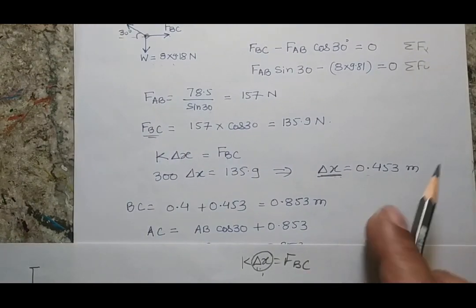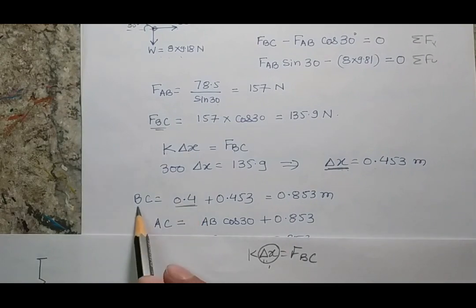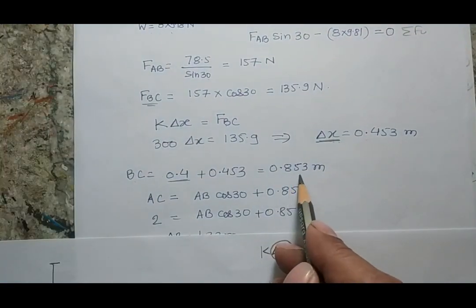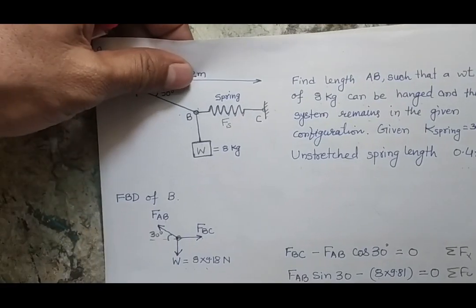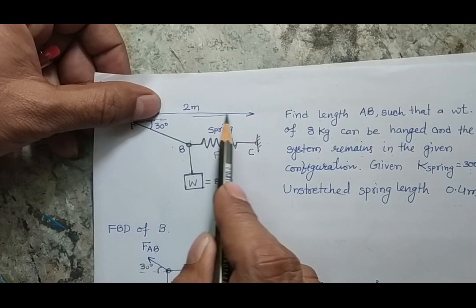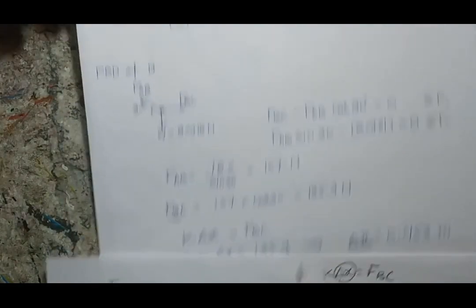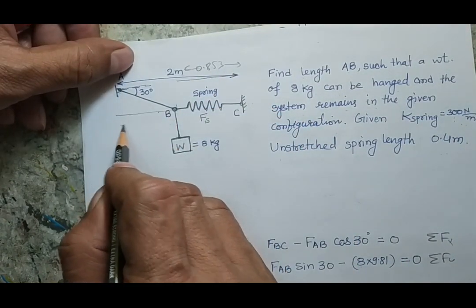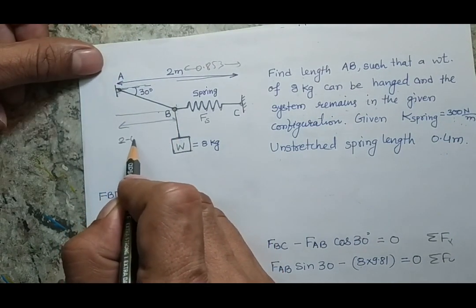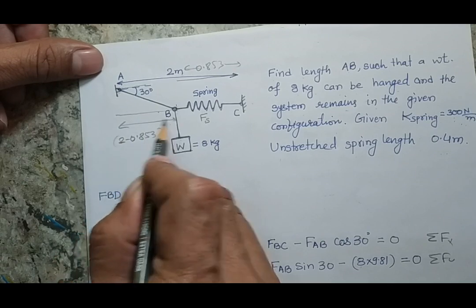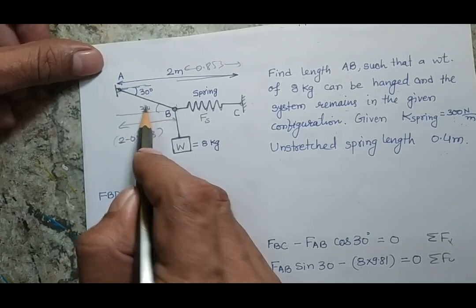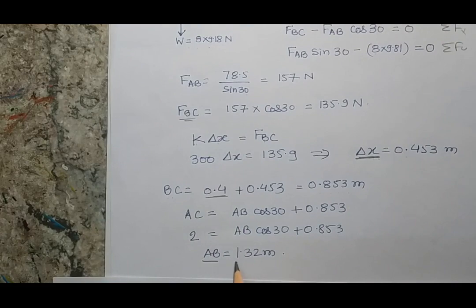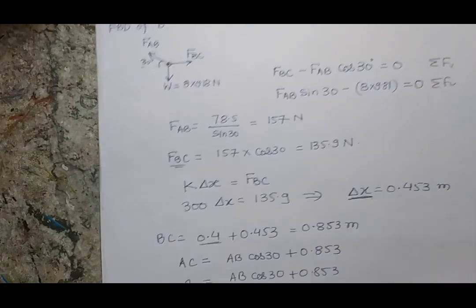The extension is 0.453 meters and the unstretched length is 0.4 meters, so in the current configuration the length BC = 0.853 meters. The total length is 2 meters, so the horizontal distance from A to B is 2 − 0.853 = 1.147 meters. This distance is the cosine component of bar AB. Solving this gives AB = 1.32 meters.